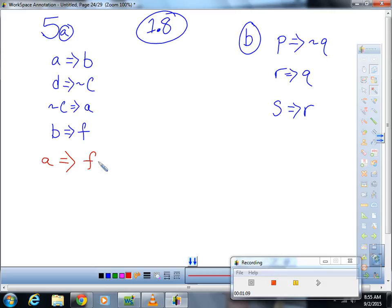But there's a better one, or a longer one if you will. If you started at d and went to not c, that would take you down from not c to a, which would take you from a to b, and take you from b to f. That's a huge chain. Where do we start out again? We started at d, so we could say that d implies f.